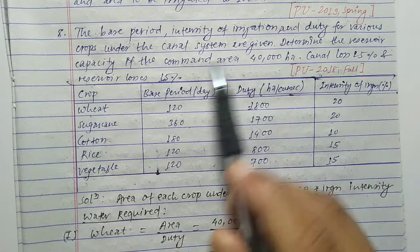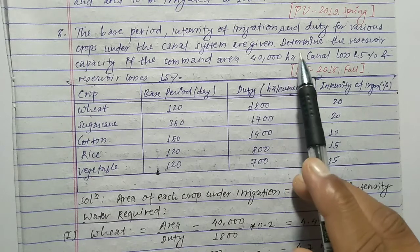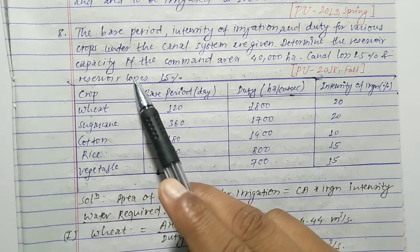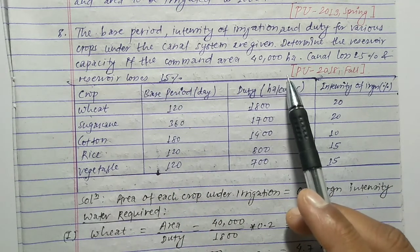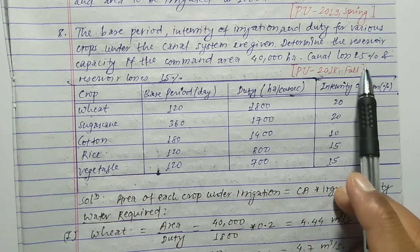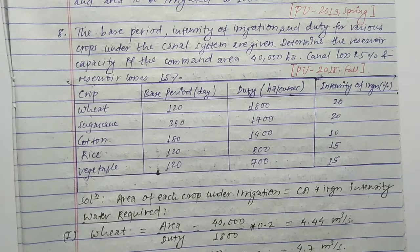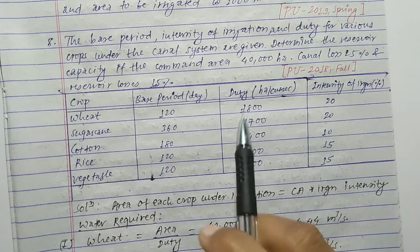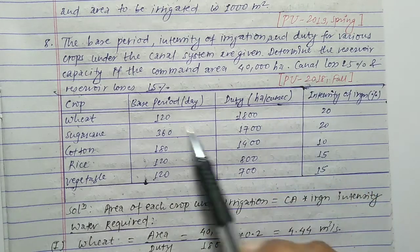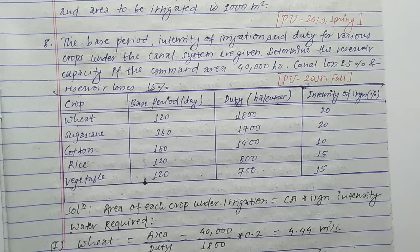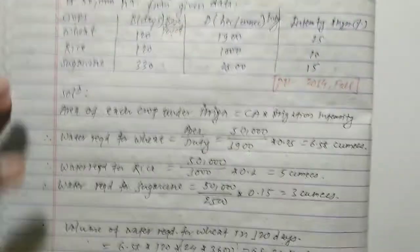The duty for various crops and the canal system are given in this table. Now we have to determine the reservoir capacity. We have to calculate the reservoir capacity if the command area is 40,000 hectare, canal loss is 25%, and reservoir loss is 15%. In the previous video we have already done the first numerical related to this type of equation.